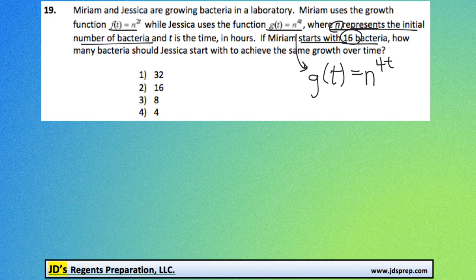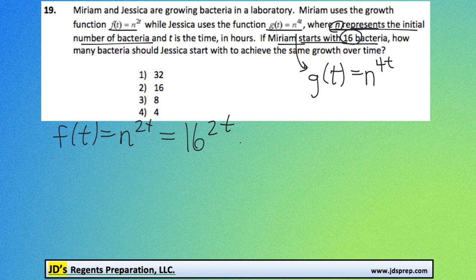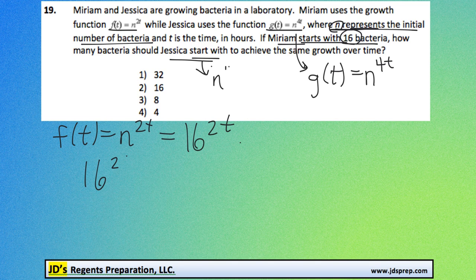So what we're going to do is replace n with 16 for Miriam's equation, which is f(t) = n^(2t). We're going to replace n with 16. Now what we need to figure out is how many bacteria should Jessica start with, meaning her n value, to achieve the same growth over time. And that means we want Miriam's bacteria growth to equal Jessica's, which is represented with n^(4t).